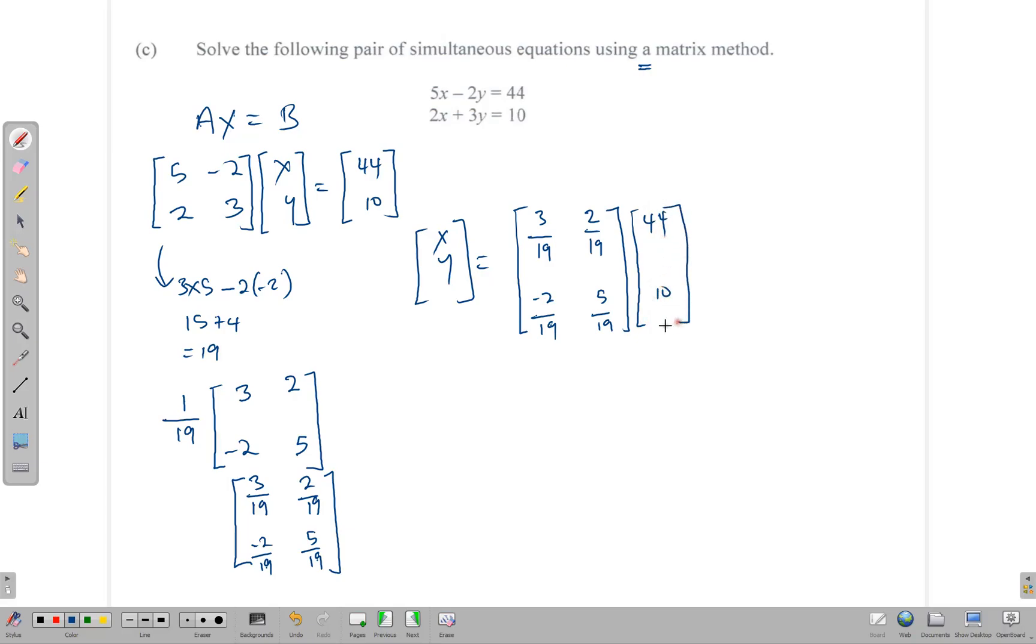Now to solve our equation, all that we need to do is to say, XY is equal to the inverse matrix, which is 3 over 19, 2 over 19, negative 2 over 19, and 5 over 19. Multiply that by 44, 10. And of course, remember when you're multiplying matrices, it's row by column. So it's 3 times 44, that's 132, plus 20. All of that over 19.